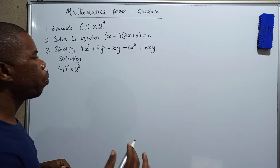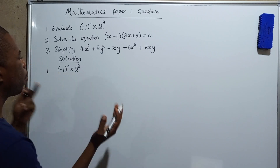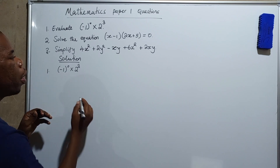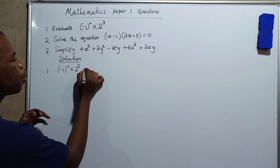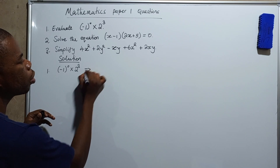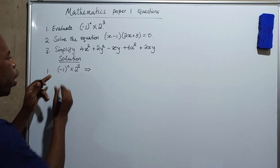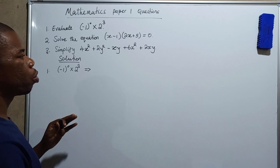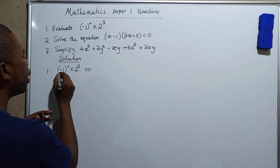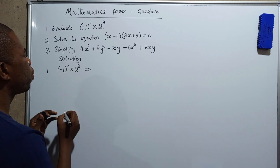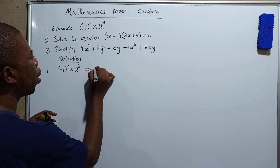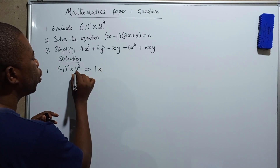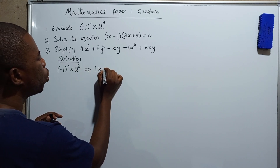You need to know which topic this question comes from. This one is from the topic of indices, so you need to apply the laws of indices. This implies that anything raised to the power zero is equal to one. So negative one raised to the power zero is actually one.